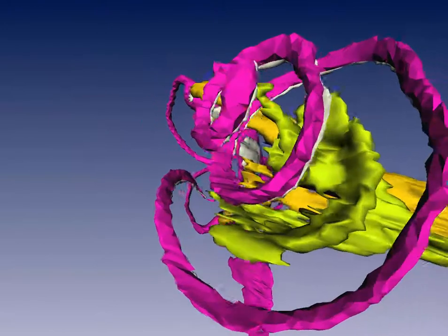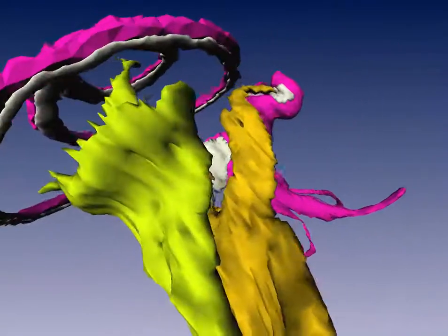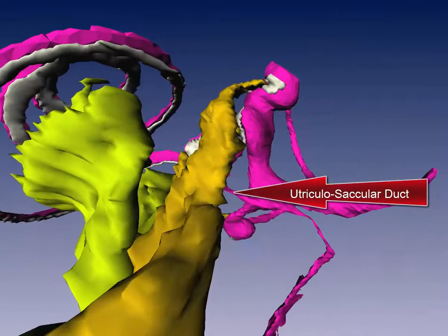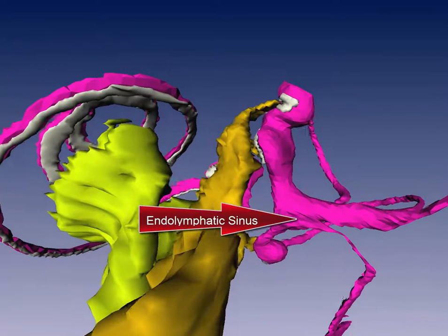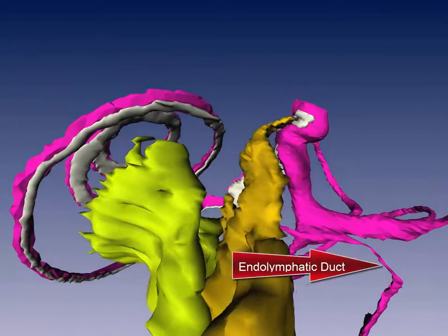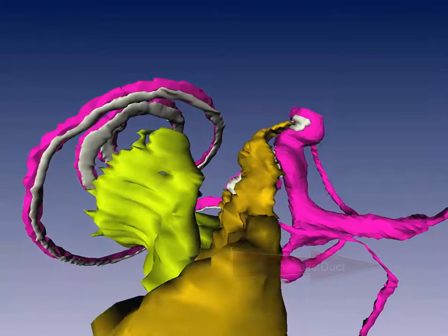This posterior view of the labyrinth demonstrates the utriculosacular duct and the three portions of the endolymphatic system: the endolymphatic sinus, the endolymphatic duct, and the endolymphatic sac.